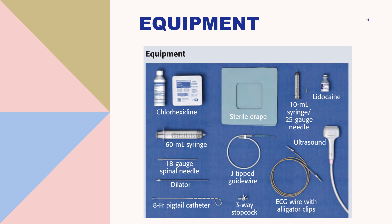We now use ultrasound-guided pericardiocentesis with advanced technology. Previously, it was done with electrocardiographic monitoring, in which one of the precordial leads (V1) is attached to the distal end of the spinal needle with an alligator clamp, and the precordial lead is used as a rhythm strip to monitor the needle tip continuously. As seen in this image, we use chlorhexidine to create a sterile field and place sterile drape. Equipment includes lidocaine in a 10 mL syringe with a 25-gauge needle, a 60 mL syringe with an 18-gauge spinal needle, a dilator, an 8 French pigtail catheter for recurrent drainage, a J-tip guidewire, a three-way stopcock, and ECG wire with alligator clips if using electrocardiographic monitoring.